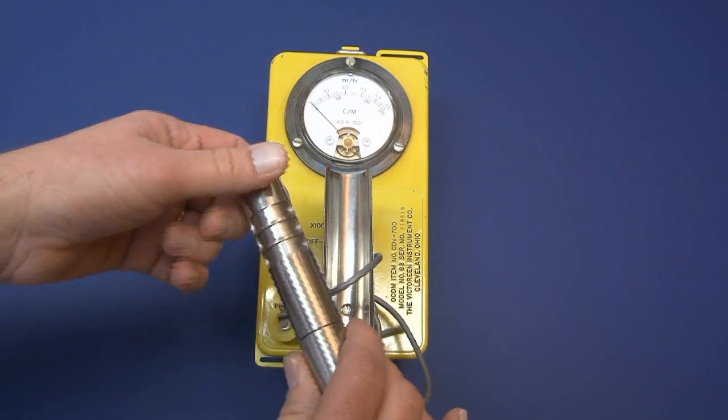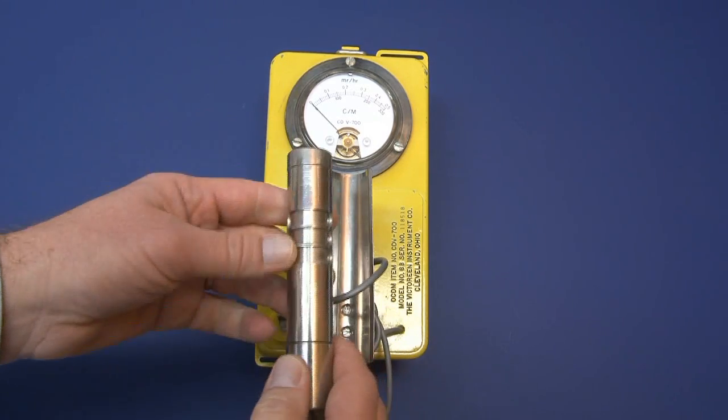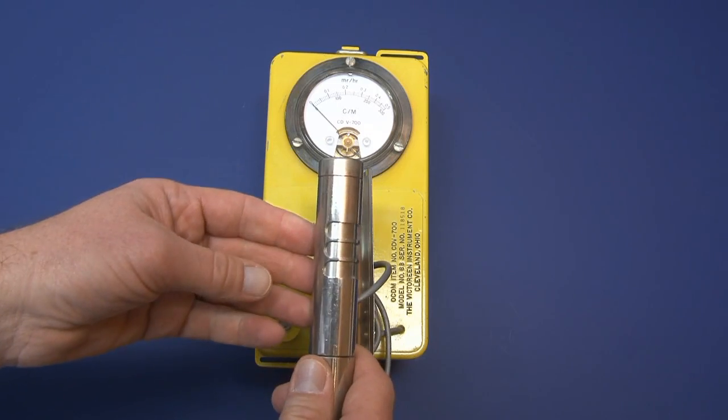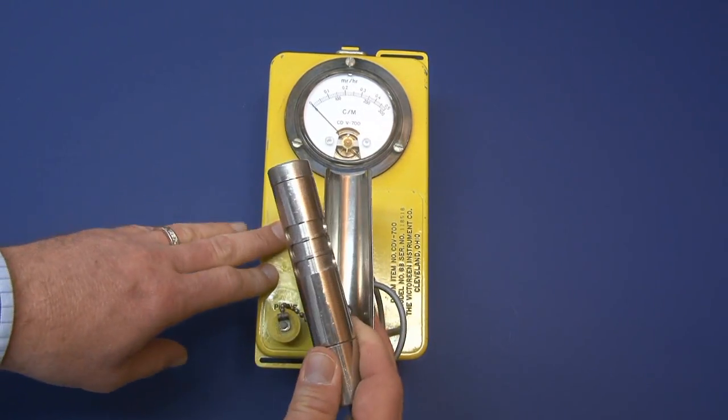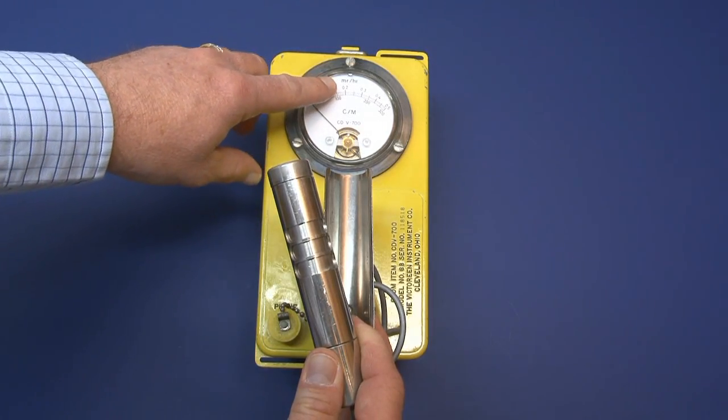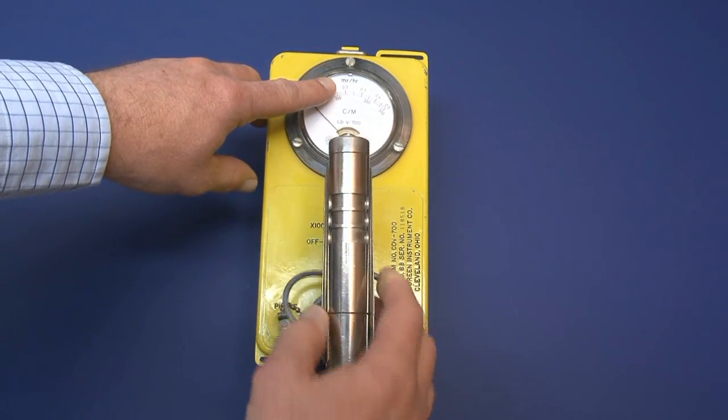The idea when they designed this instrument was that with the window closed, you would detect gamma radiation only, and you'd be taking radiation exposure rate measurements, and you would report your readings in MR per hour.